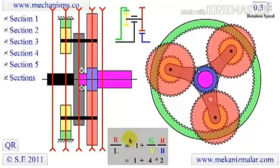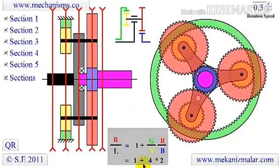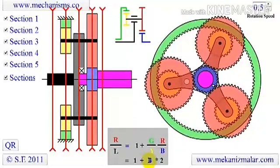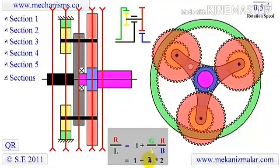If we substitute the previously given teeth numbers, 96, 24, 48, and 24, into the equation given, we come up with a speed ratio of 9.